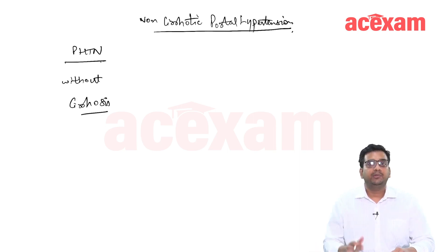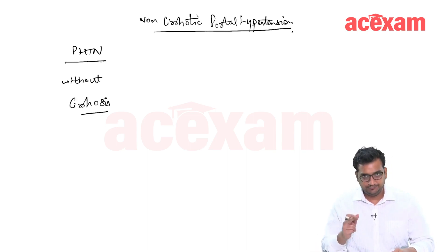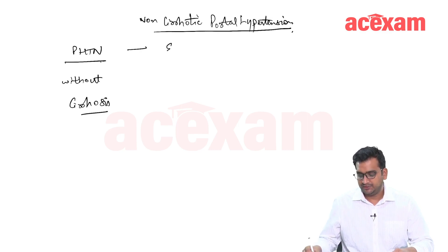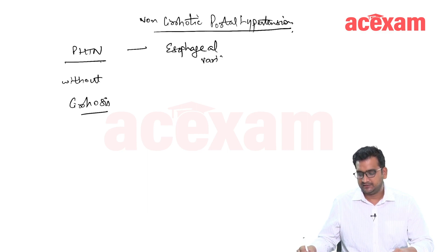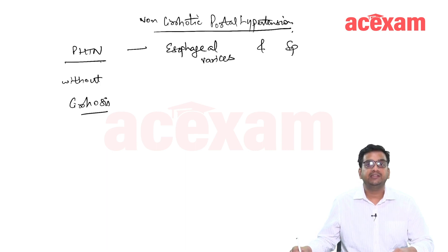As discussed in the topic of portal hypertension, the characteristic features of portal hypertension are the presence of esophageal varices and splenomegaly.